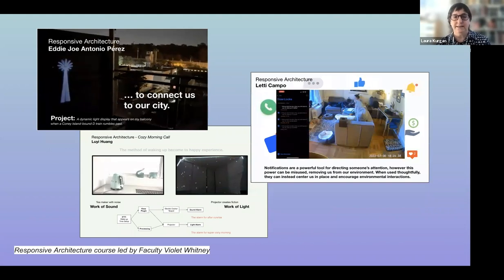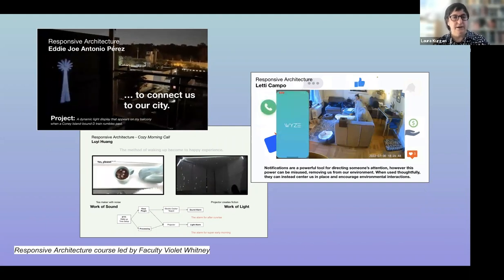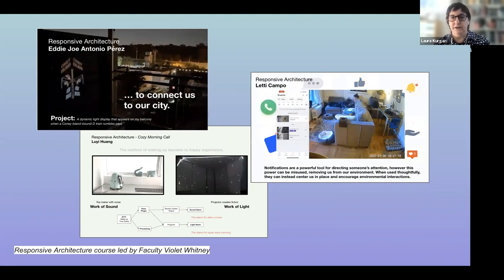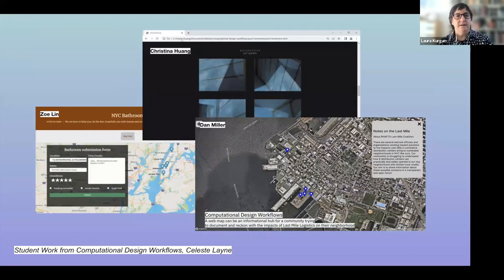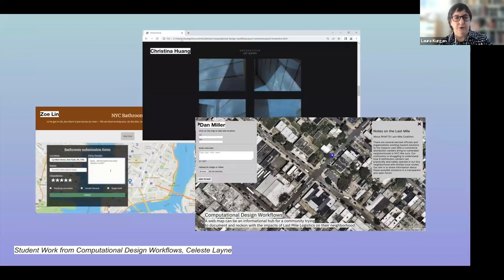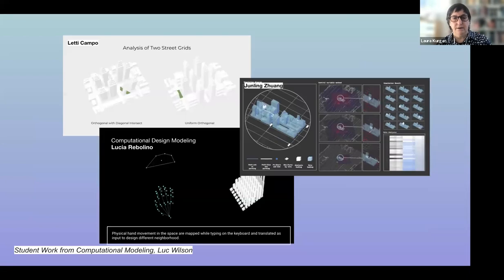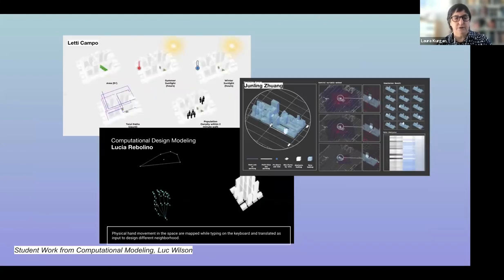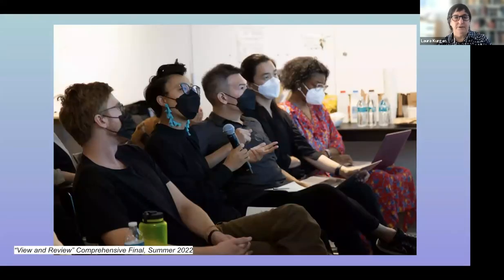Here's some of the work that came out of last summer. Last summer we did responsive architecture, which is now moving into the fall as an elective — spatial UX — because a lot of students really wanted mapping systems as part of the summer semester. This is part of the computational design workflows class, showing a lot of diversity in the approaches to how to put various things together. This is from the computational modeling class that Luke Wilson teaches, and here is our final review from the summer, where you see Snowaria Zhang, Anthony Vankey, Dan Tae Young, and Celeste Lane.